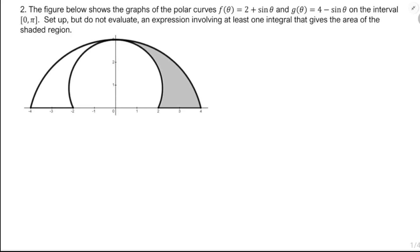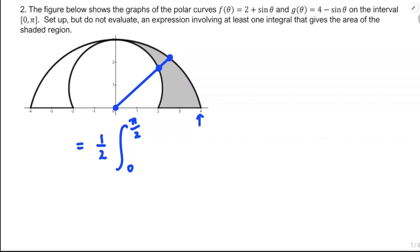Next we've got an area between two curves. I know I'm going to need to subtract two integrals, because if I reach from the origin to the edge of the shaded region, I'm running into both curves. The area is going to be one-half, and both curves are in the first quadrant on zero to pi over two. On the outside I've got g of theta, which is four minus sine theta, starting at r equals four when theta equals zero, while f of theta is two plus sine theta starting at r equals two. So I need one-half of g of theta squared minus one-half of f of theta squared, d-theta — an expression involving at least one integral that gives the area of the shaded region.